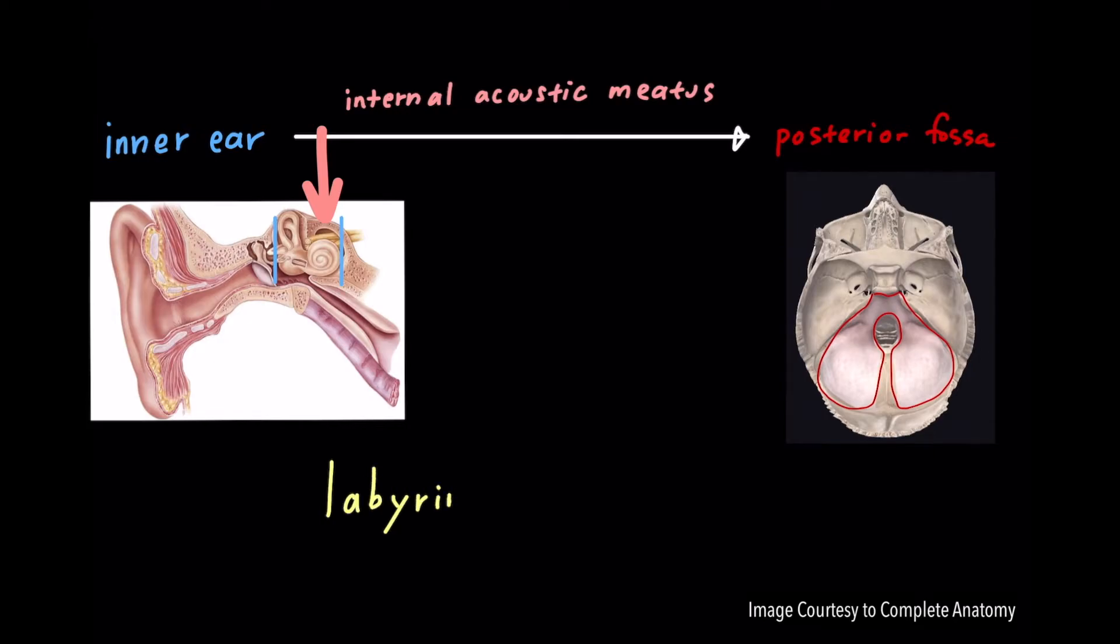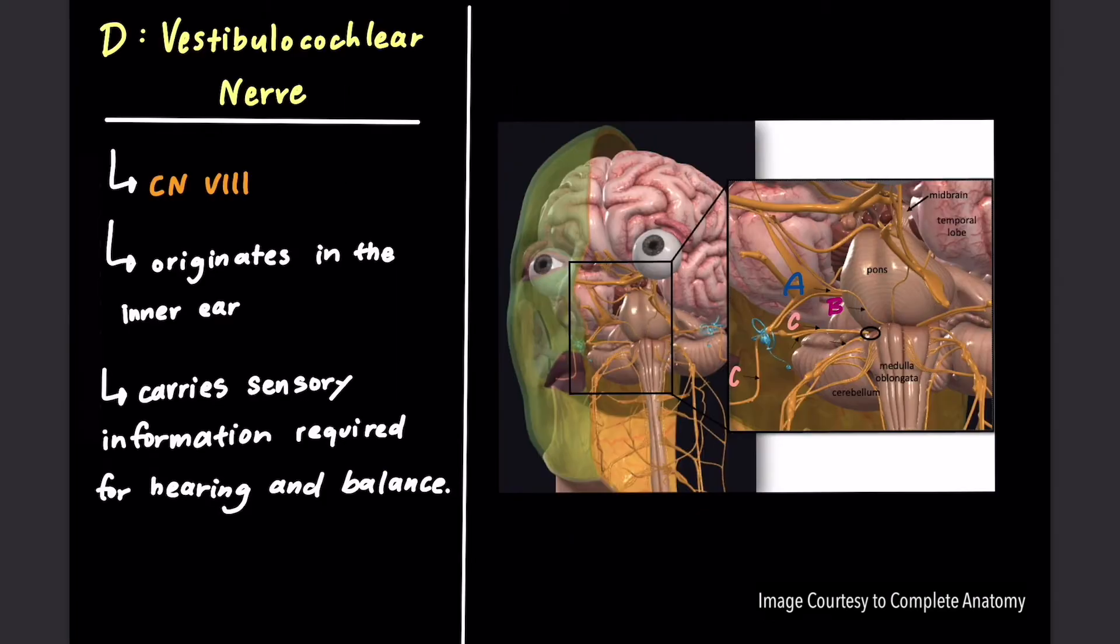Cranial nerve number eight is the vestibulocochlear nerve. It originates in the inner ear, shown here in blue.